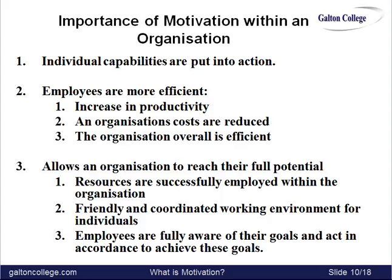Finally, employees are fully aware of their goals and act in accordance to achieve these goals. Well, if the employees know what their goals are, then they can work towards them. If there is ambiguity about that, then the workers may not be motivated — they don't know what they are trying to achieve, they don't know what the task is, they don't know what the long-run goal is. So it's important to have motivation within the organisation for these reasons.